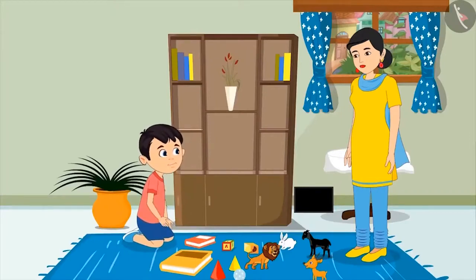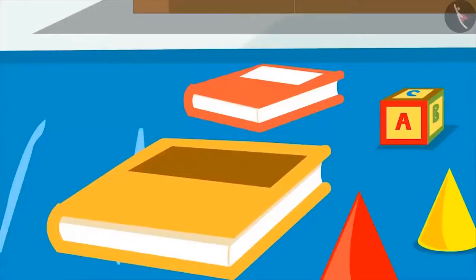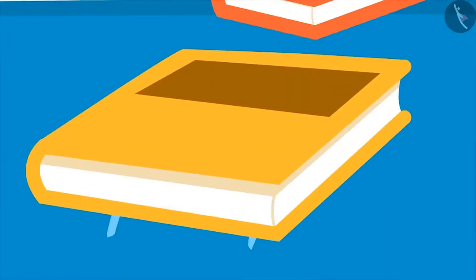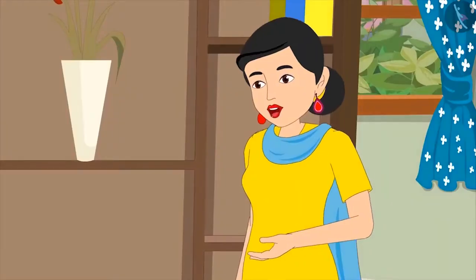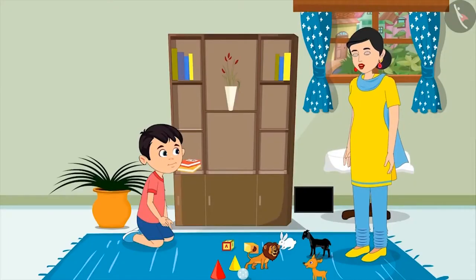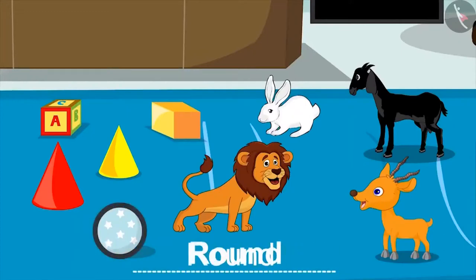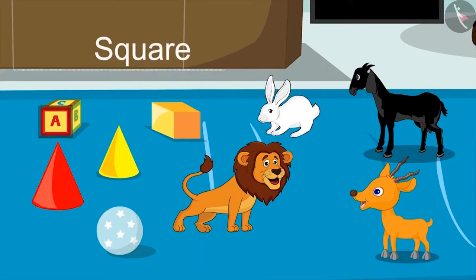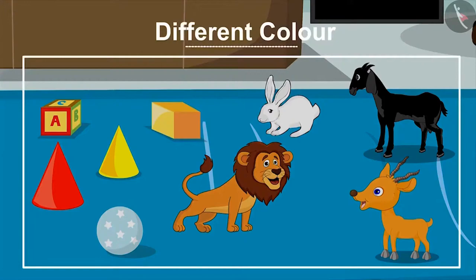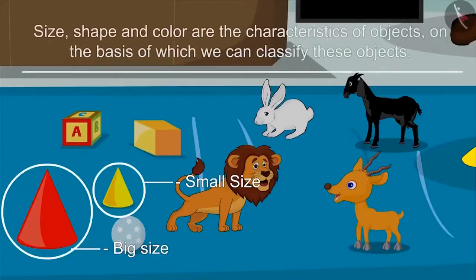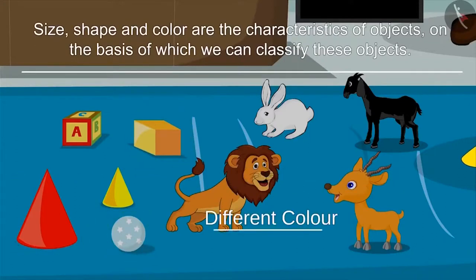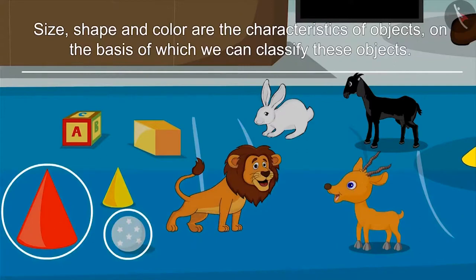Chotu, come on now — keep both your books in your cupboard according to their size. Keep the big book at the bottom and keep the small book on it. Can you tell me out of these two books, which one is the big book and which one is the small book? Yes, this one is the big book and this one is the small book. Very good Chotu. Let's look at these toys now — the shapes of all these toys are different. One is round like a ball while another one is square like your book, and their color is also different.